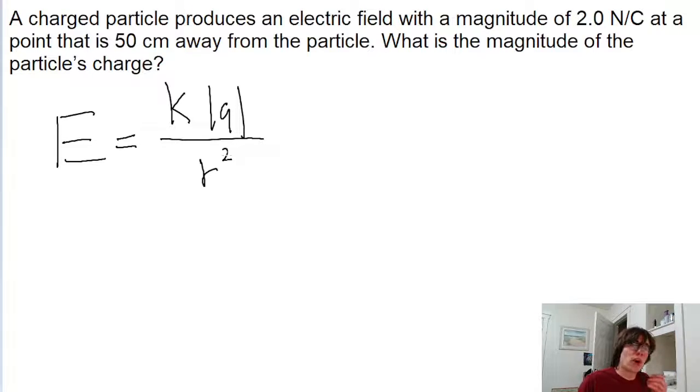In this problem, we're asked to find the magnitude of that charge, so we're going to be taking this equation and algebraically solving it for the charge q. This is pretty simple algebra - we just multiply both sides of the equation by r squared and divide both sides of the equation by the Coulomb constant k.